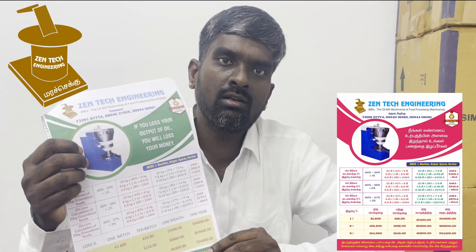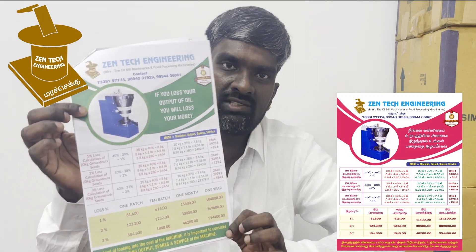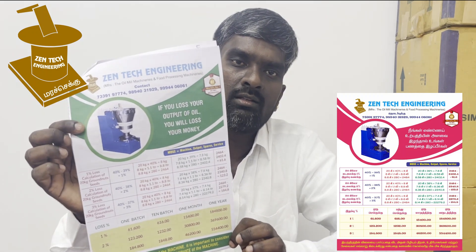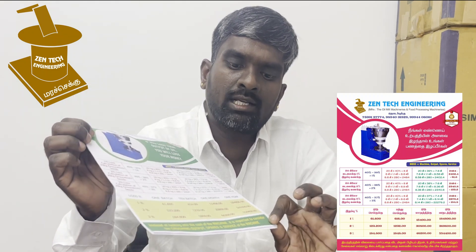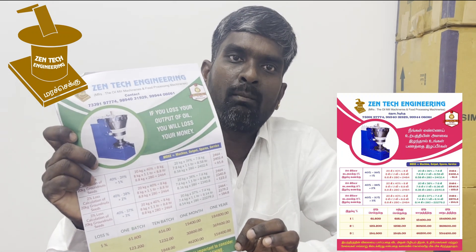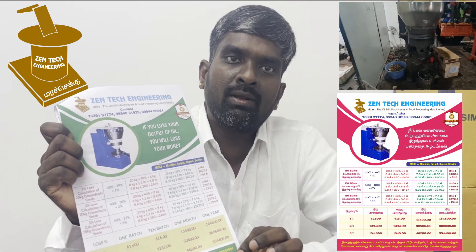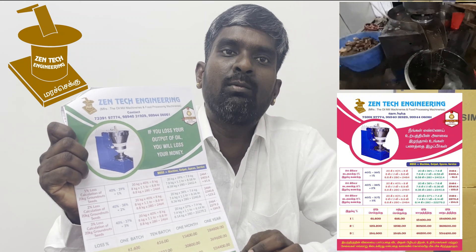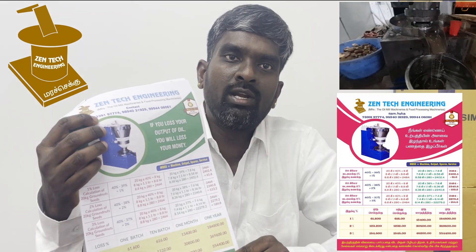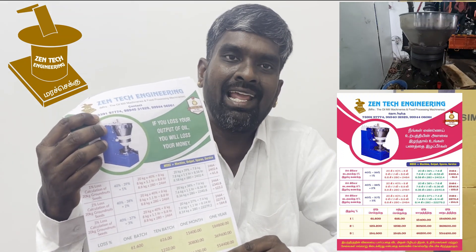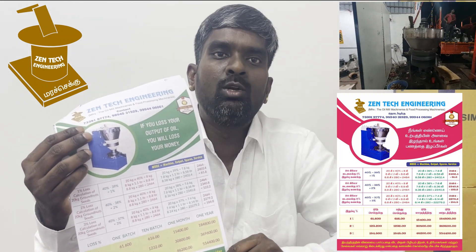Why have we not introduced that 50 to 100 kg machine till now? Already I have uploaded a video like this. You have seen that video already. That output loss — if you lost 1% you will lose more than 1 lakh, 84,000 per month. If you lost 2% you will lose 3,69,000. If you lost 3% loss, you will lose 5,54,000. If you run 10 batches per day at 20 kg per batch, that is the reason till now we have not introduced our 50 to 100 kg machine.